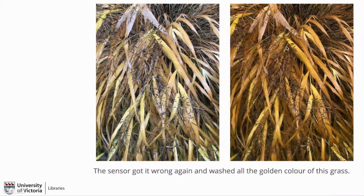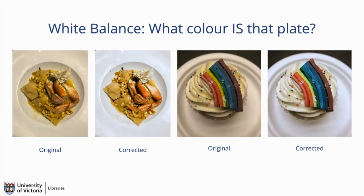There is an activity in the lesson plan that teaches you how to adjust white balance while you're taking the photo — it makes a world of difference. This is an example of something as simple as making sure the color of the plate is accurate, and how much of a difference it makes in making food look accurate and how much more delicious it looks.